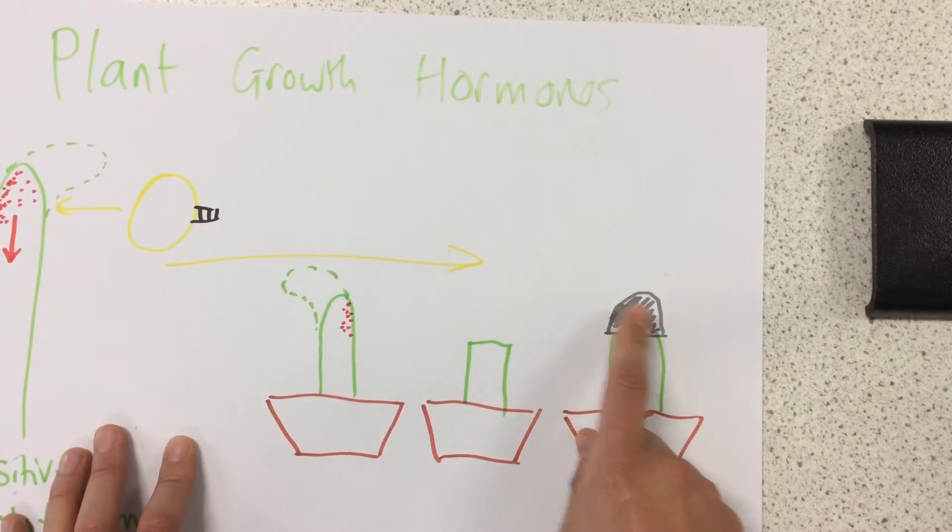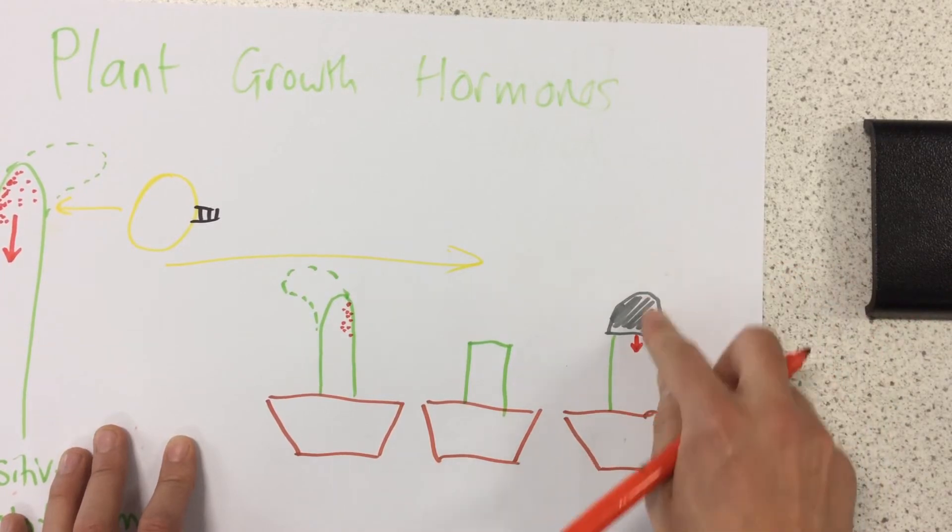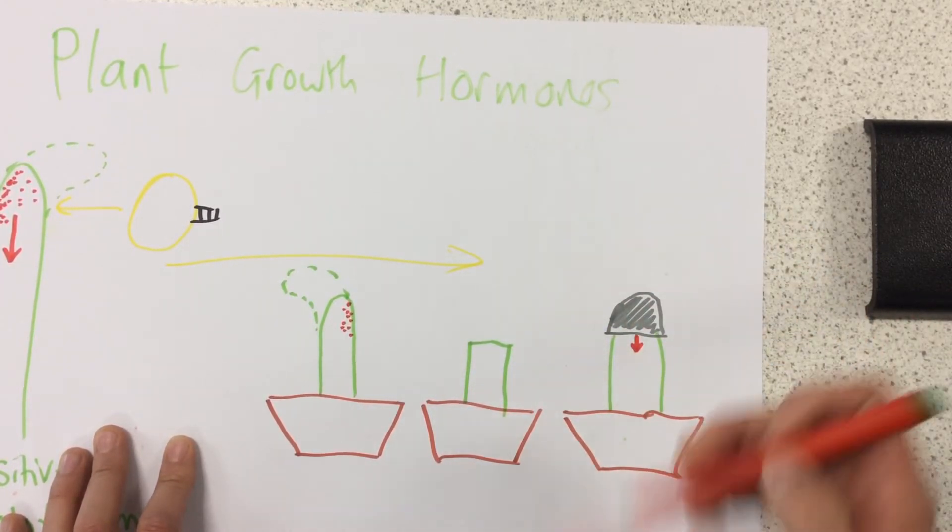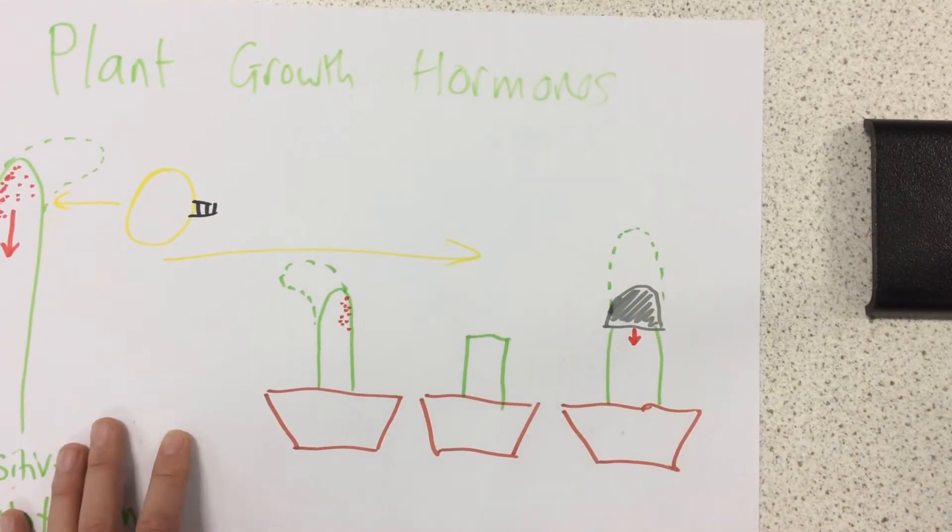Which means the auxins are just going to diffuse backwards down the shoot, and it's just going to encourage growth this way. So this one would just grow directly upwards.